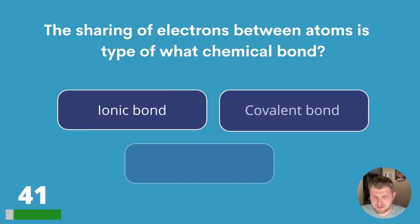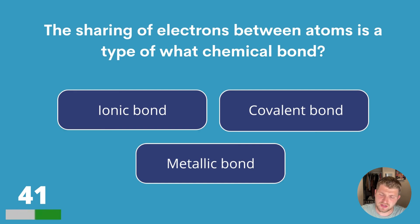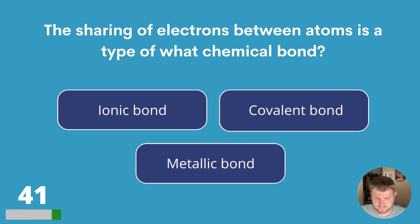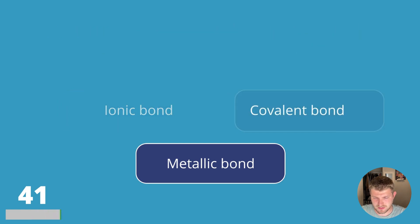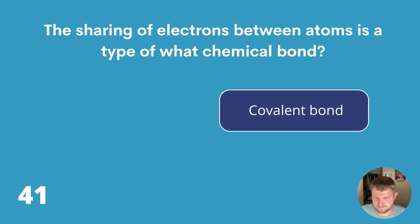Question forty-one. The sharing of electrons between atoms is a type of what chemical bond? Ionic bond, covalent bond or metallic bond? The answer is covalent bond.